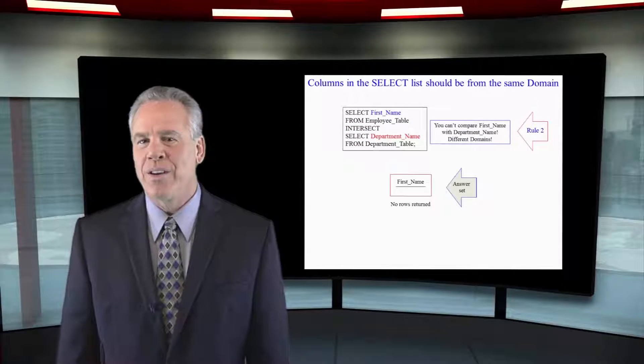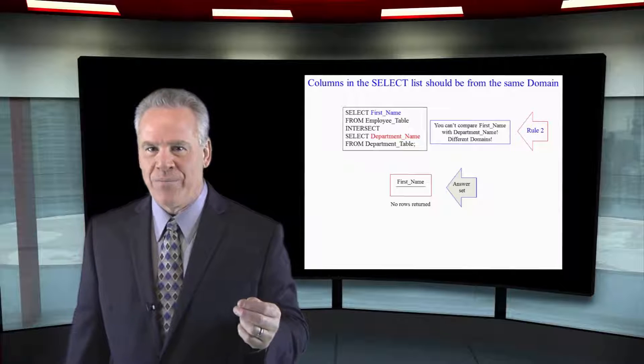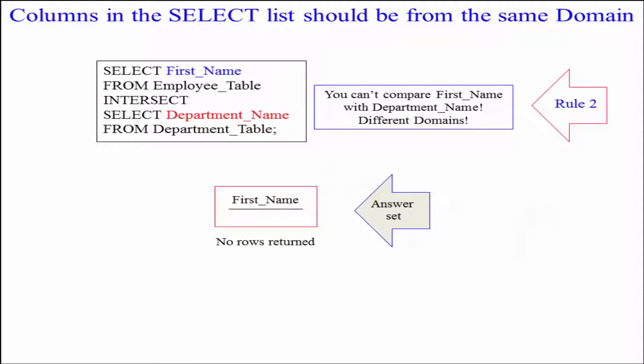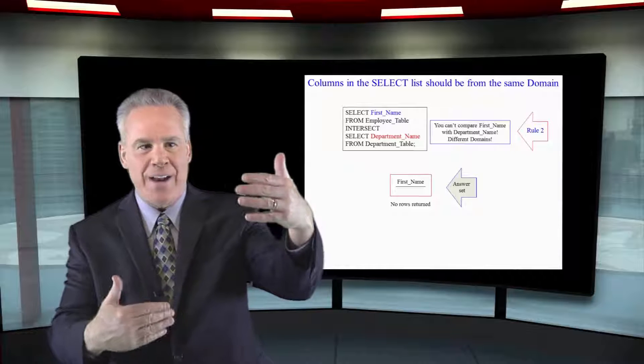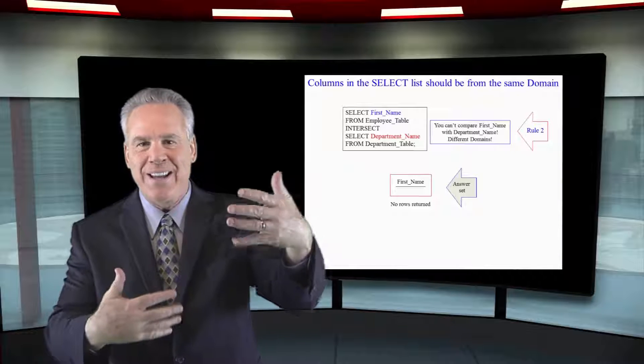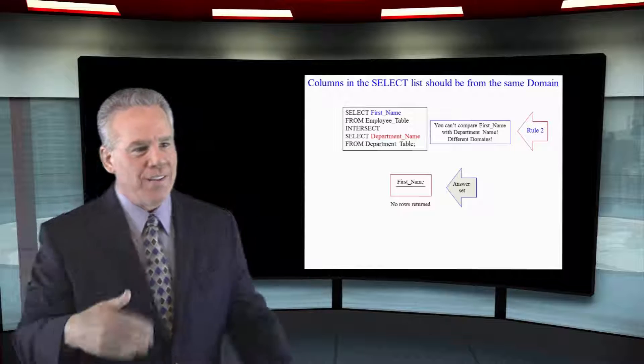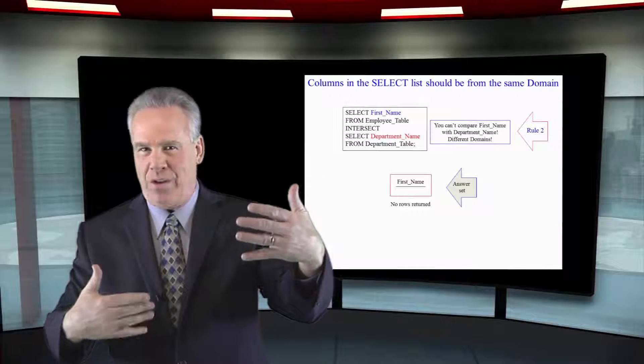Here's another query to prove a point that's going to bring back no rows. I'm going to select first name from employee table, intersect select department name from department table. Now we did follow rule one. We have the same amount of columns in the top and the bottom, and they're both character data, but there's one problem: they're really not from the same domain. They don't represent the same range of values.